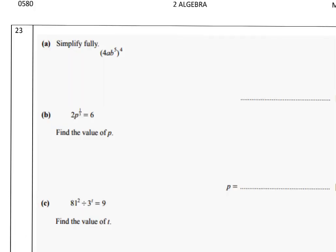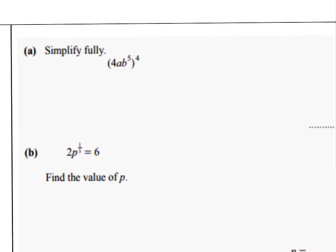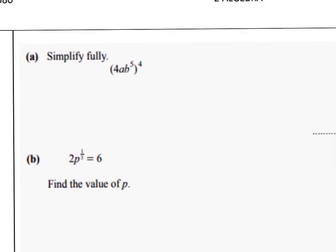Problem 23: (4 · a · b^5)^4. Distribute the powers: 4^4 is 256, a^1 to the power 4 gives a^4, and b^5 to the power 4: multiply 5 times 4 equals 20, giving b^20. Answer: 256 · a^4 · b^20.